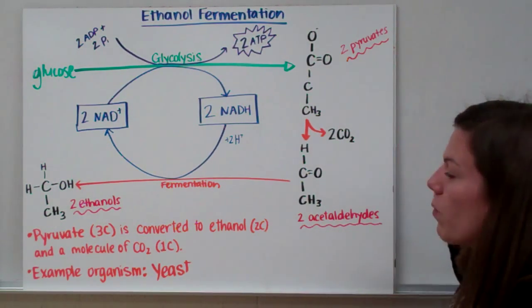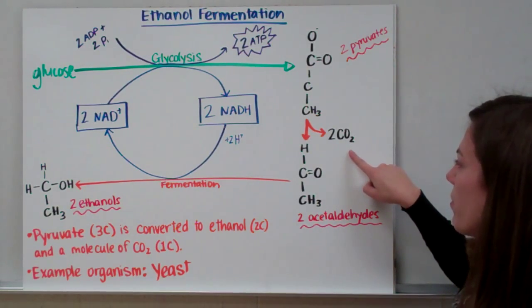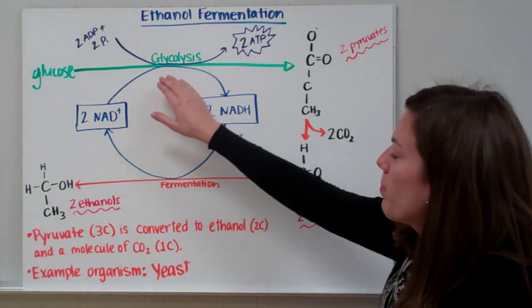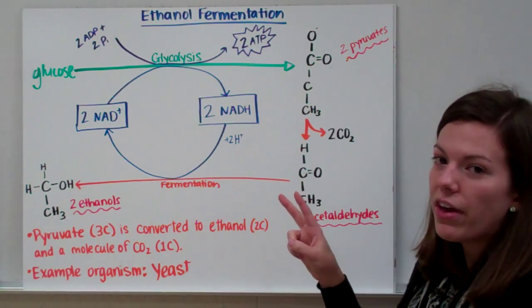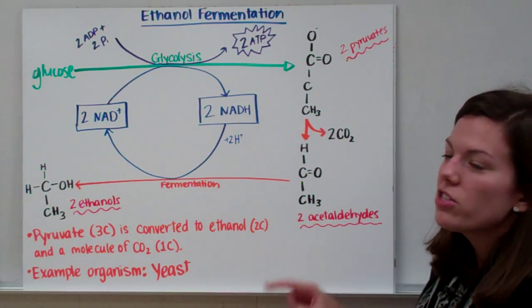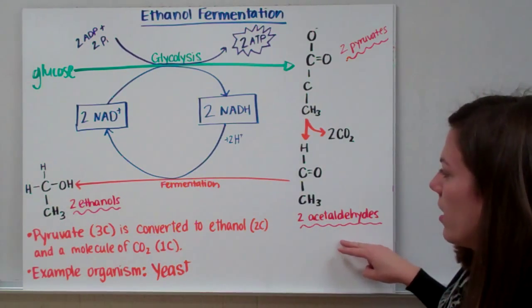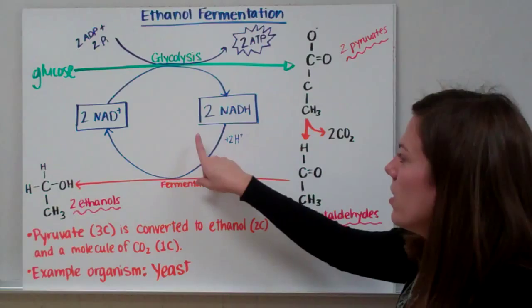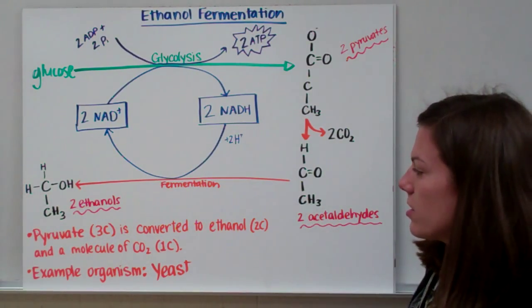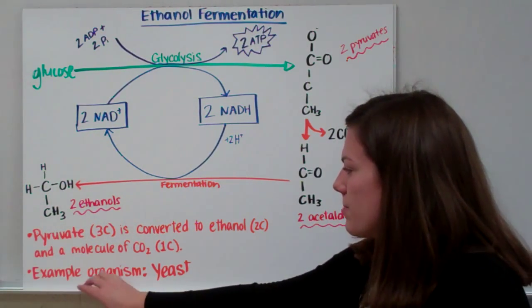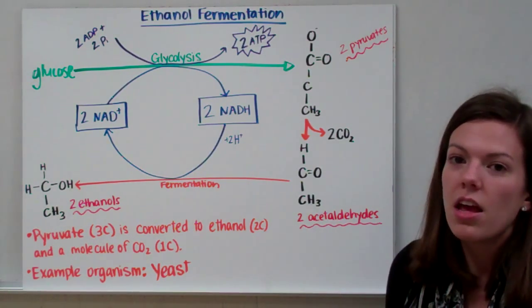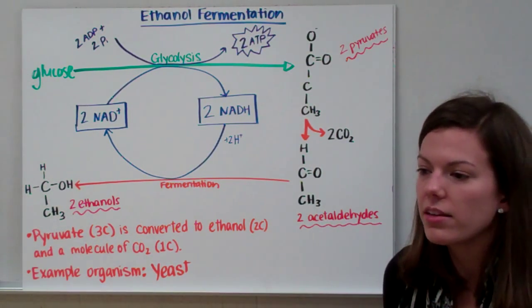So for each pyruvate, we make one molecule of carbon dioxide and one molecule of ethanol. But since the product of glycolysis is two pyruvates, when we do ethanol fermentation, we make two acetaldehyde and change them to two ethanol. And as a result, we recycle two NAD+ molecules as well. So an example organism that does this is yeast. Yeast do ethanol fermentation, and they're necessary in order to make things like beer and wine.